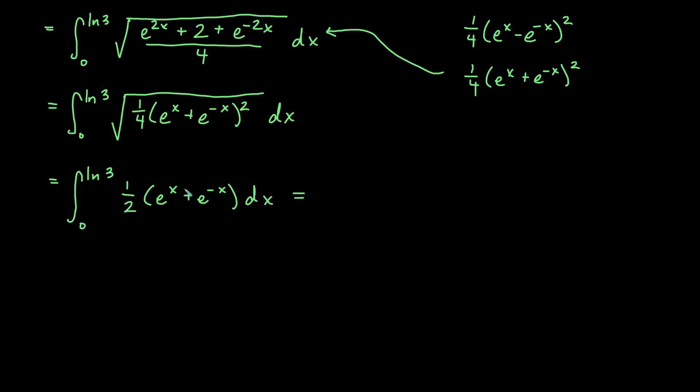So now we'll integrate, and this is easy. You can even bump out your 1 half if you like. So if we take the anti-derivative of e to the x, that will just be e to the x. If we take the anti-derivative of e to the minus x, just like when we had the chain rule, we would multiply by negative 1. Here we would divide by negative 1, which still changes the sign, so we get minus e to the negative x.